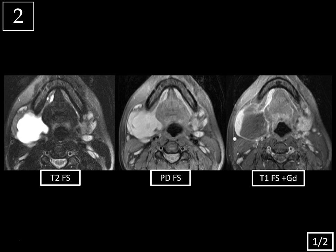There are a few muscles to be aware of at the floor of the mouth. At the midline, you have the genioglossus muscles — here's the right and left genioglossus. As you move laterally, you have the hyoglossus muscles, and then at the far periphery, you have the mylohyoid muscle, which is like a sling at the floor of the mouth. Between the mylohyoid and the hyoglossus muscles, you have the sublingual space, which contains the sublingual glands and ducts. It also contains the submandibular duct — not the gland though. The submandibular gland is here, within the submandibular space, which is located inferolateral to the sublingual space.